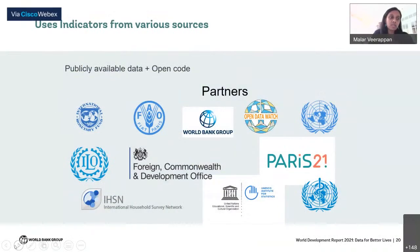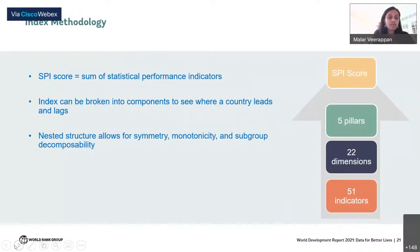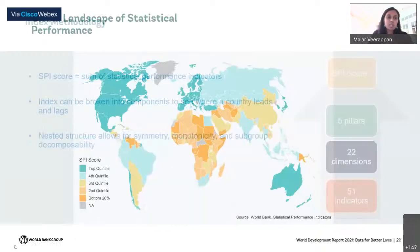The SPI indicators can be added up to form composite scores — aggregated by dimensions, then by pillars, then an overall score which is the SPI index. The overall index gives a broad sense of where a country stands but can be broken into components to see where a country leads and lags and where it may need to improve, since different countries have different strengths and weaknesses. It is an additively decomposable index. Full details of construction are available in the policy research working paper and technical note, downloadable from the SPI website.